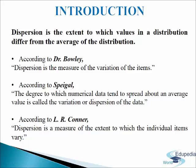Let us understand this with the help of the following definitions. According to Dr. Bowley, dispersion is the measure of the variation of the items. According to Spiegel, the degree to which numerical data tends to spread about an average value is called the variation or dispersion of the data. And according to L.R. Connor, dispersion is a measure of the extent to which the individual items vary.